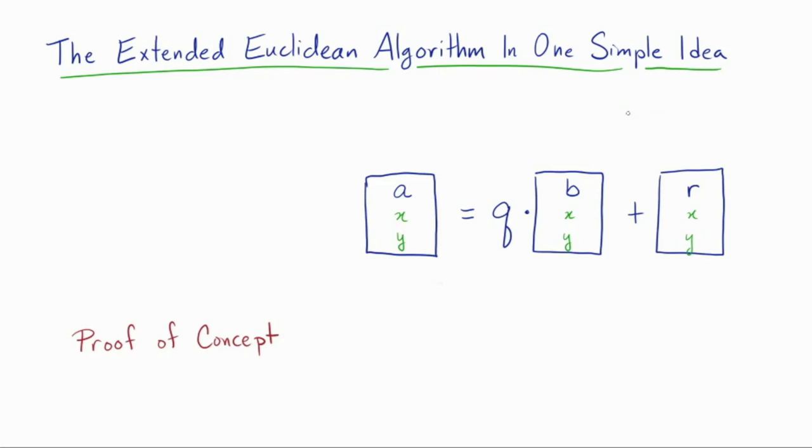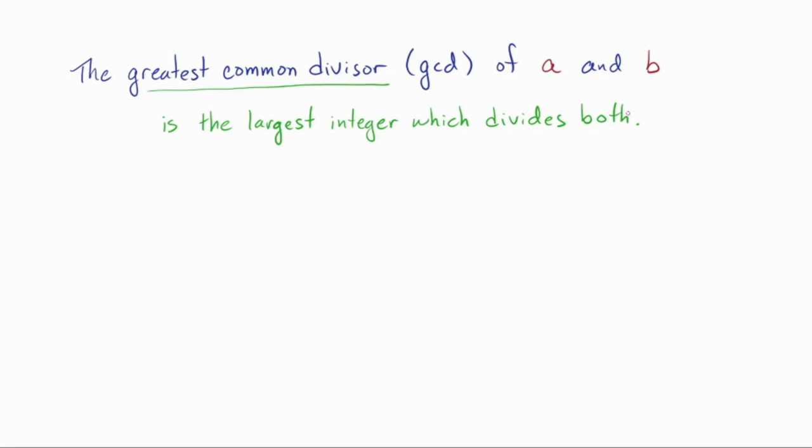To explain what the extended Euclidean algorithm does, we need to return to what the Euclidean algorithm does. The Euclidean algorithm finds the GCD or greatest common divisor of two integers. It's the largest integer that's a factor or divisor of the two that you've got. So for example, the GCD of 15 and 12 is the biggest integer dividing both of them, namely three. If you need a review on the GCD or the Euclidean algorithm, check the links in the description below.